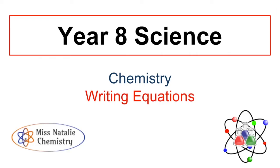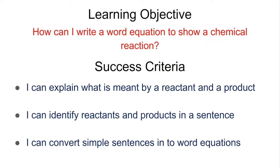This video is going to go through how we write out word equations as part of the Key Stage 3 science course, specifically for chemistry, looking at Year 8 combustion. The objective for this video is to learn how to write out word equations from a sentence to show a chemical reaction. By the end, you should be able to explain what we mean by a reactant and a product, identify reactants and products in a sentence, and convert simple sentences into word equations.